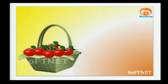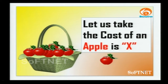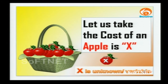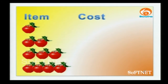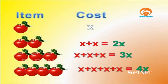Let us take a basket of only apples. Let us take the cost of an apple as x. Here x is an unknown variable — we do not know the cost of the apple, so we take it as x. Let us find the cost for different numbers of apples. For one apple the cost is x rupees. For two apples, x plus x, that is 2x rupees. For three apples, x plus x plus x, that is 3x. And for four apples, that is 4x.